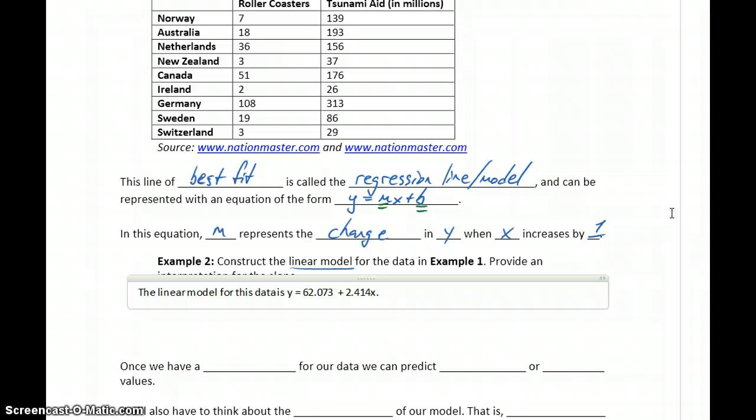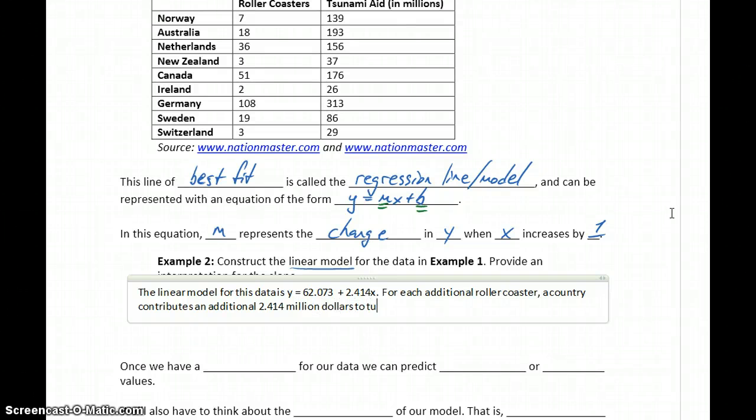We also want to interpret the slope, which in this case is 2.414. So what we're saying is, for each additional roller coaster, a country contributes an additional 2.414, which in this case is in millions, million dollars to tsunami aid.